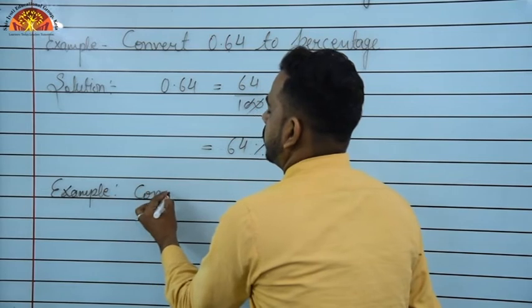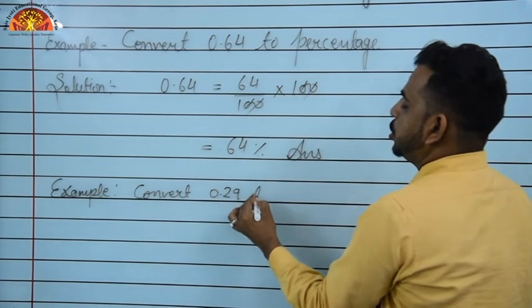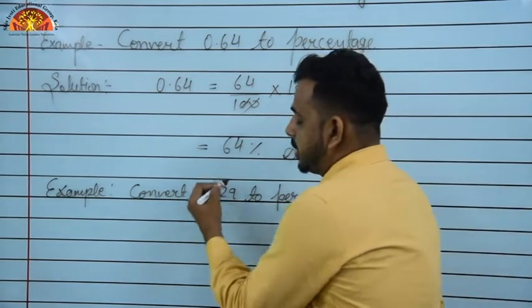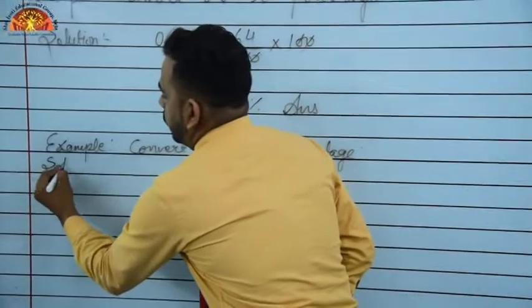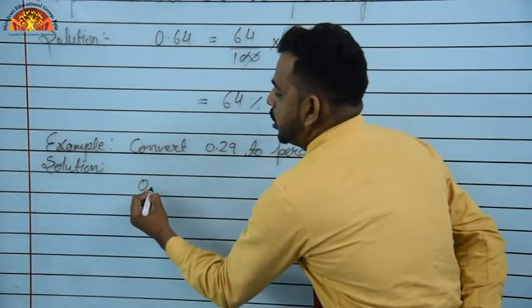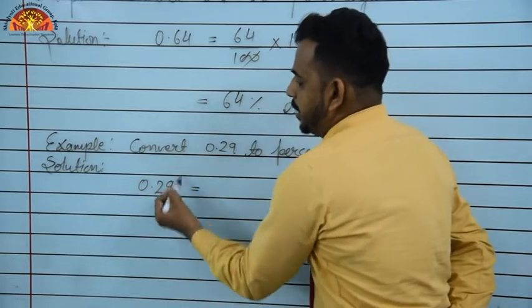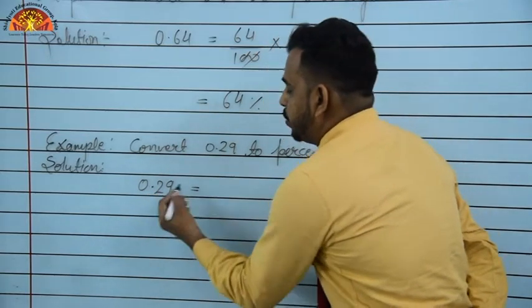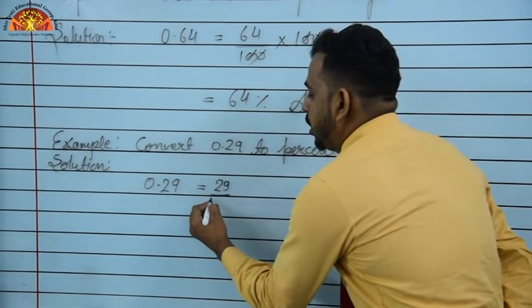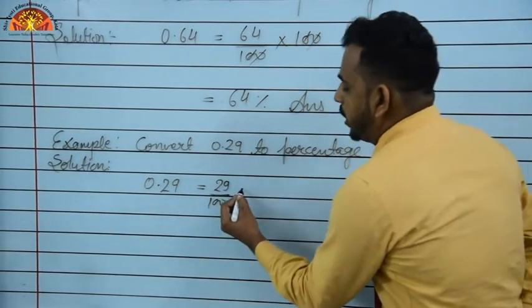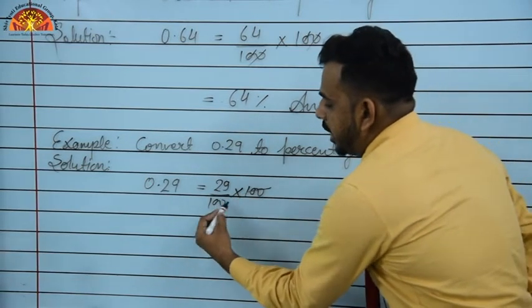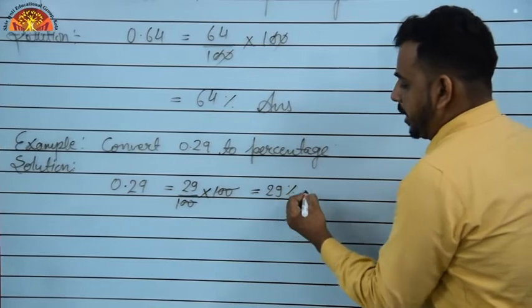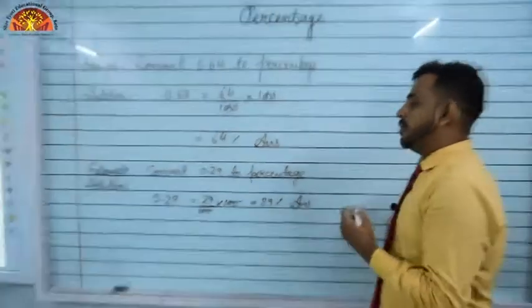Another example: convert 0.29 to percentage. Given decimal is 0.29. There are 2 digits after the decimal point, so denominator is 100: 0.29 = 29/100. Then multiply by 100: 29/100 × 100 — the 100 cancels — result is 29. Put the percentage sign — answer is 29%.